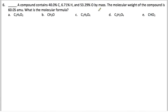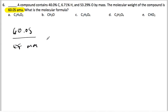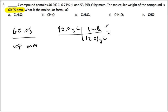Looking at the problem, notice how it tells me the actual weight of the compound is 60.05. So the first thing I'll do is put 60.05 on top of the fraction. All I need to do is put the empirical formula molar mass on the bottom. To do that, I've got to find the empirical formula. So I'm going to take 40.0 grams of carbon divided by 12.01 grams per mole, and that equals 3.330 moles of carbon.